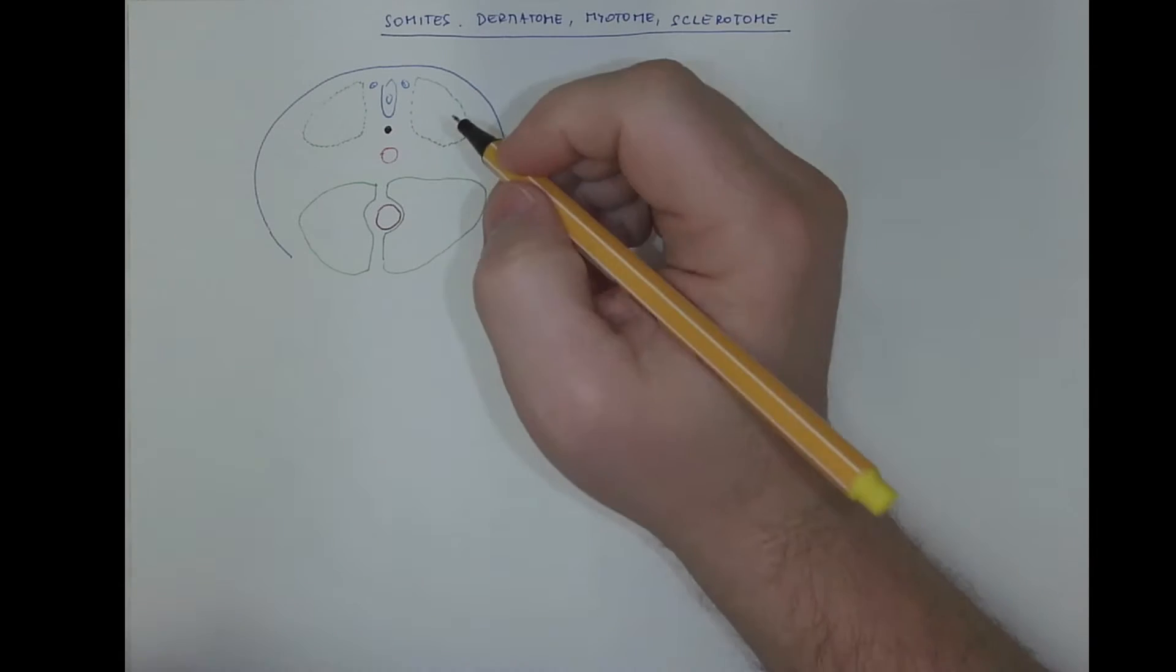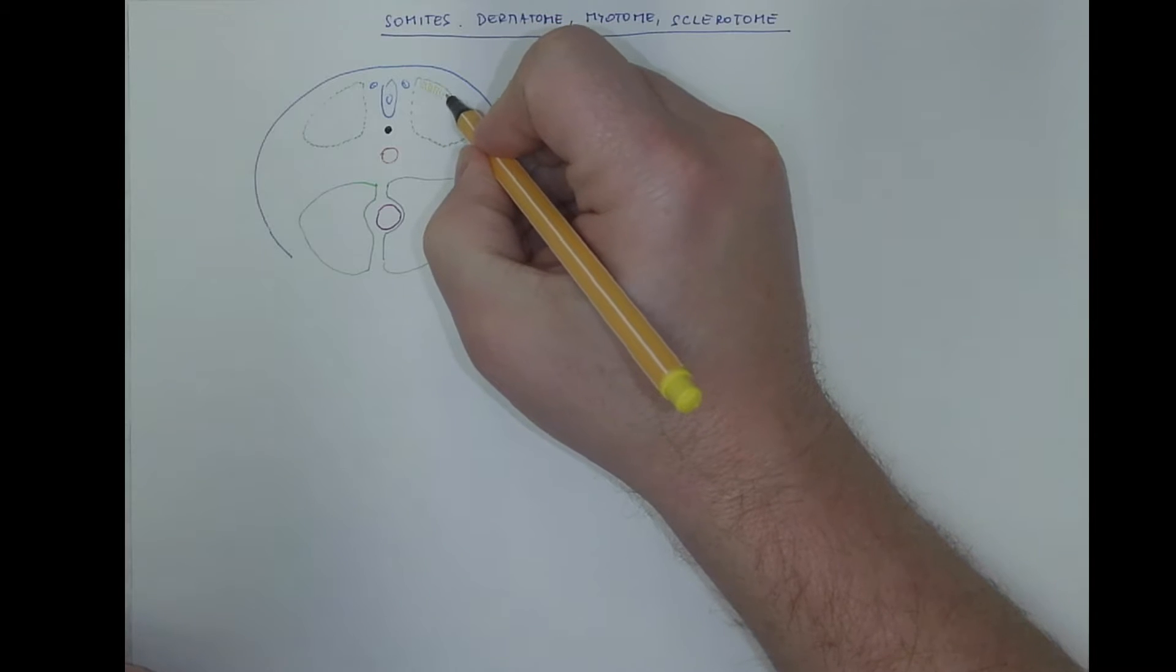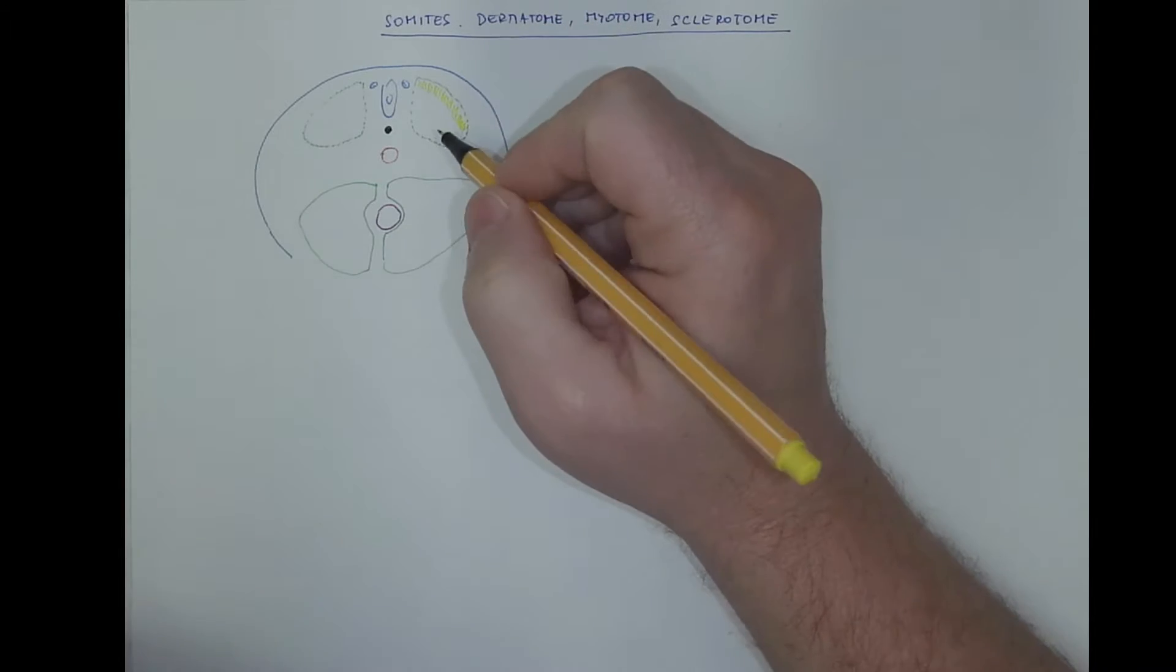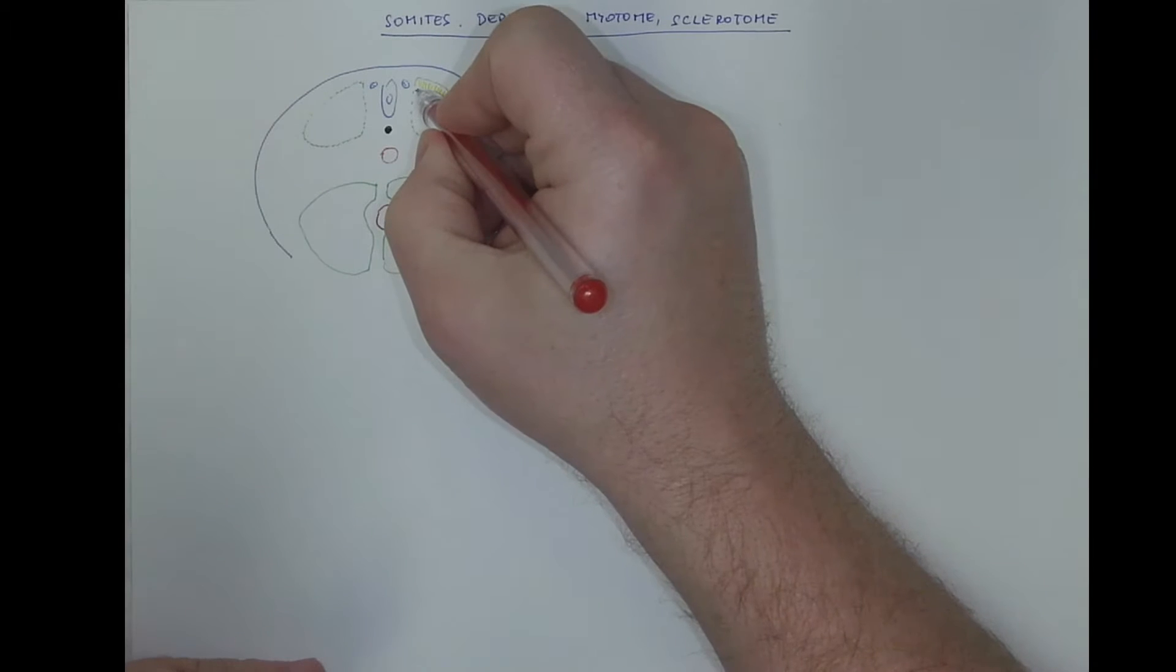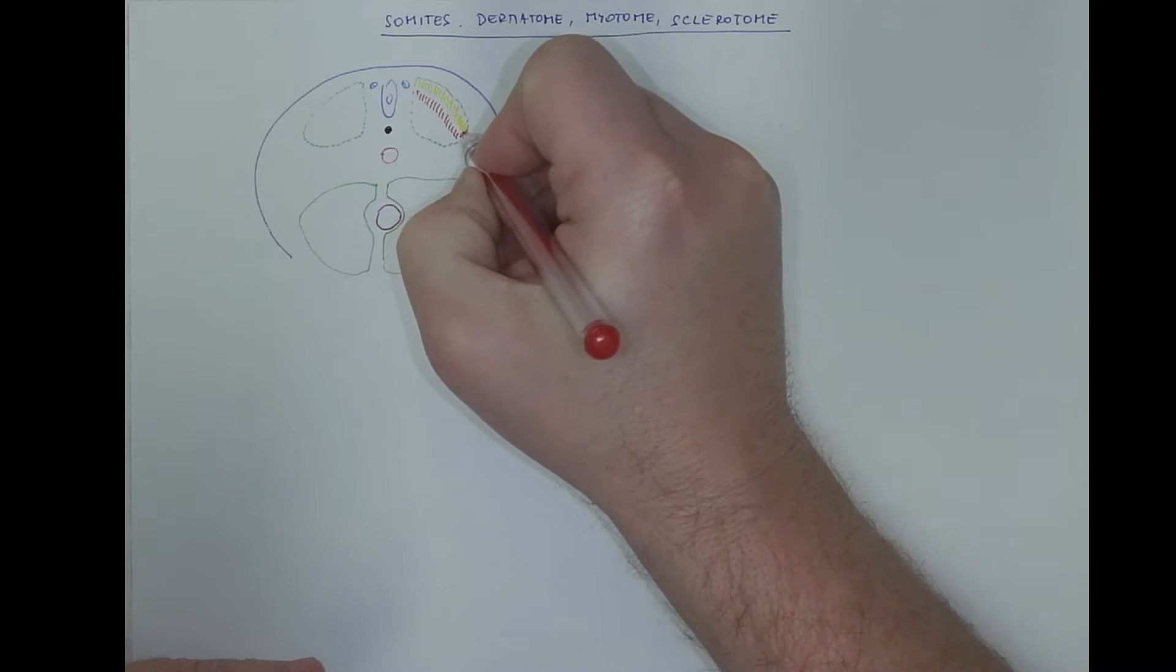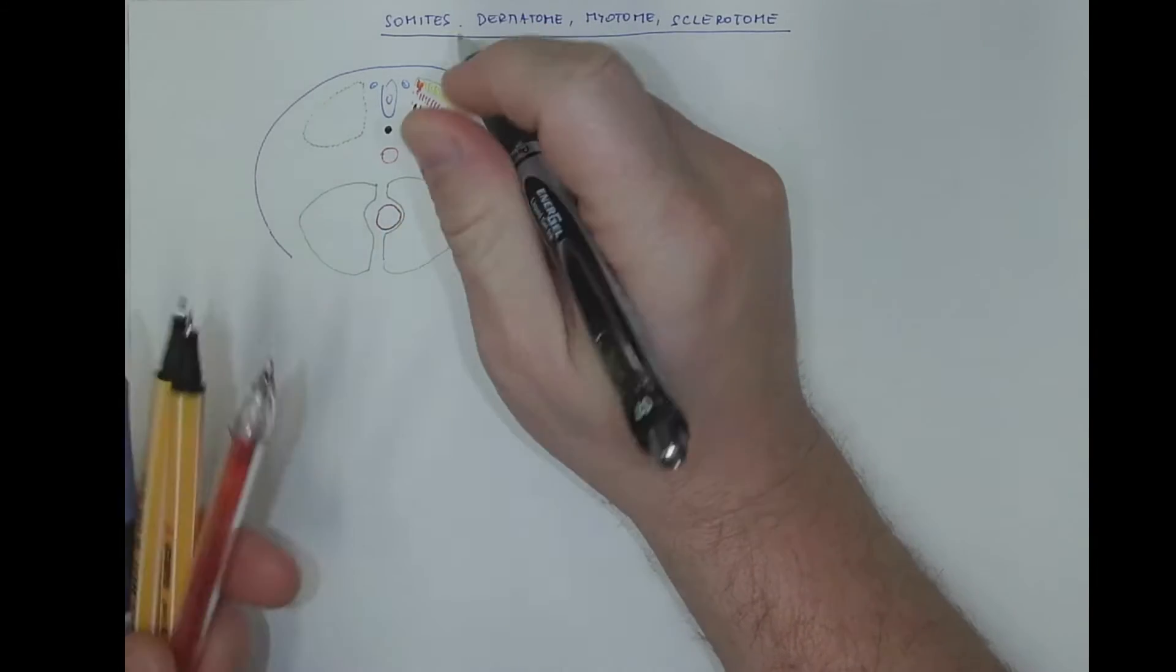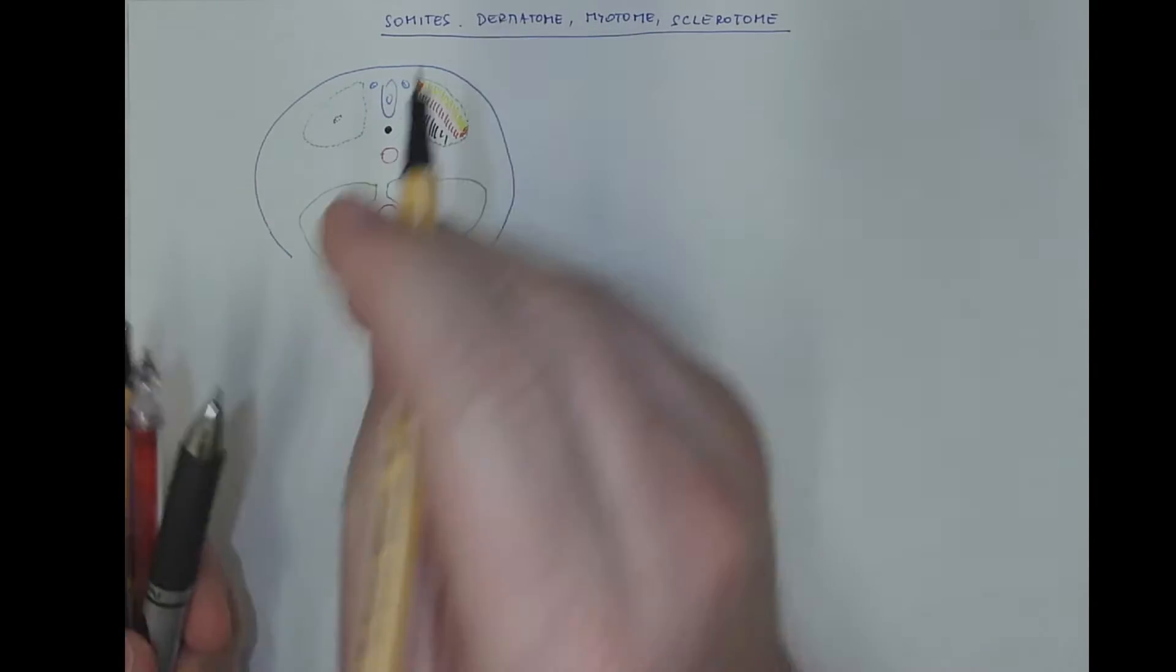It splits into several cell populations. One of these, on the surface, the closest to the body surface, is called dermatome. Then we got another population called myotome, and there is a sclerotome. Temporarily there is even a small cavity inside the somite.